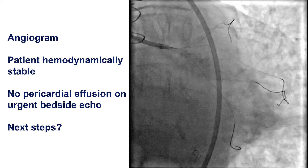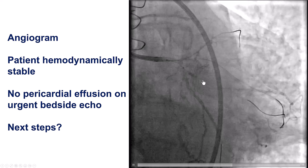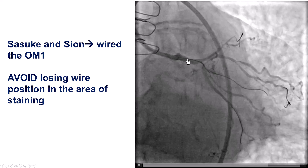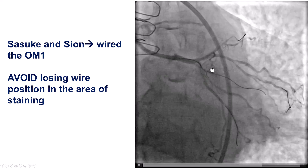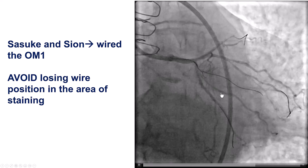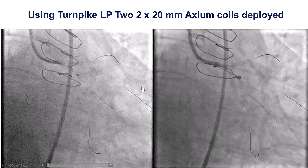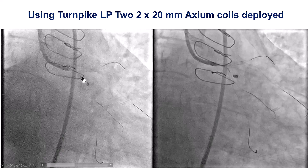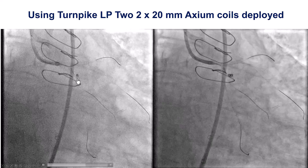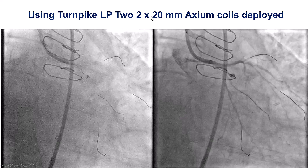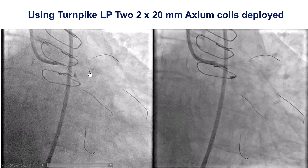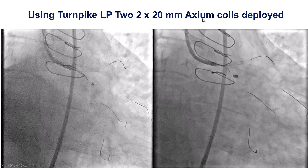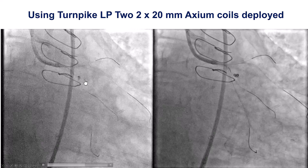The plot thickened with a complication of not having a wire in the obtuse marginal branch. We used the Sasuki again with a workhorse guide wire and were able to cross into the first obtuse marginal branch. We left the wire in the top branch, and since extravasation was continuing — even though there was no effusion by echo — we decided to treat this. We delivered two coils, two by 20 millimeters, into this small branch through the Turnpike LP. These are Axiom 0.014 coils, which can be delivered through any standard microcatheter.